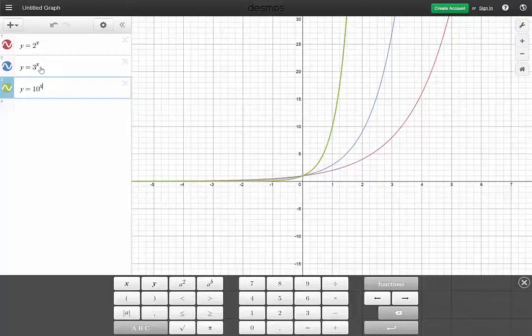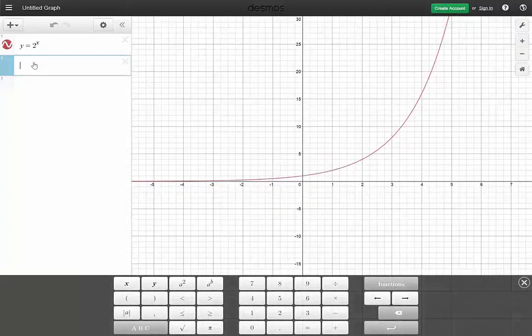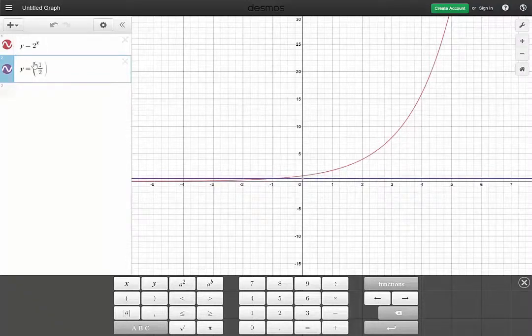Now, I'm going to keep y equals 2 to the x and play a little bit with it. What if, instead of a base greater than 1, we choose a base between 0 and 1? Let's choose 1 half. Y equals 1 half to the x.